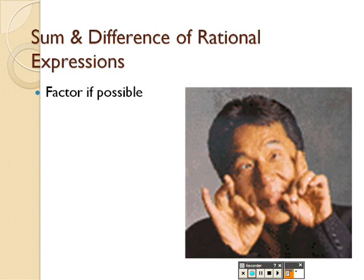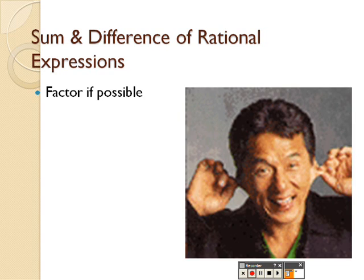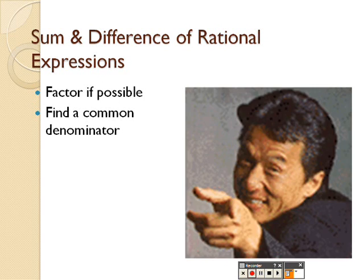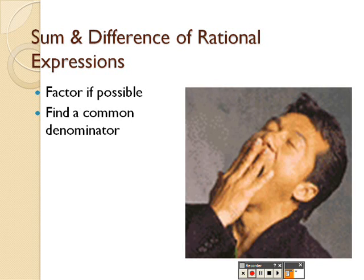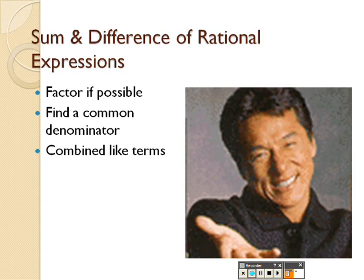Some in difference of rational expressions. You want to factor, if possible. That's your very first step you want to do when you're simplifying these. And then you want to find common denominators as well. That's the whole point. See what common denominators are there. You can't push anything together. And then combine all your like terms to get your answer.